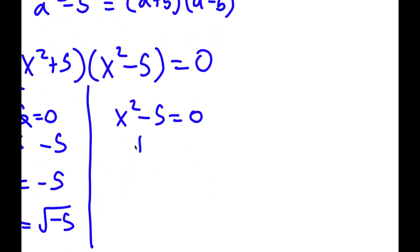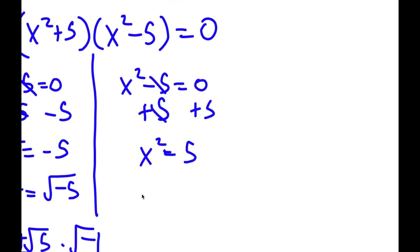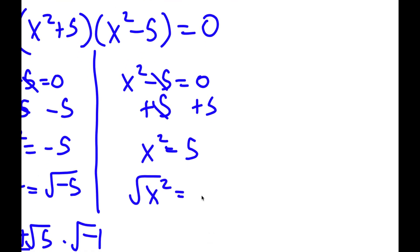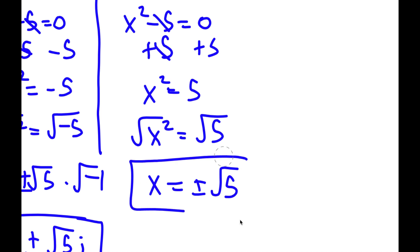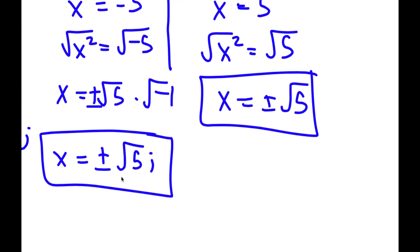For x squared minus 5 equals 0, I add 5 on both sides and get x squared equals 5. Taking the square root on both sides, the square root of x squared is x, and the square root of 5 gives positive or negative square root of 5. So these are two more solutions, giving me four solutions total to this problem.